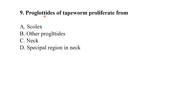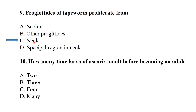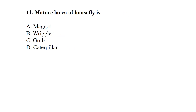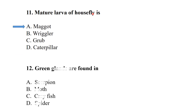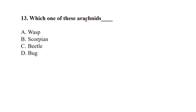Proglottids of tapeworm proliferate from the neck. How many times do larvae of Ascaris moult before becoming an adult? — Four times. Mature larvae of housefly. Green glands are found in crayfish.